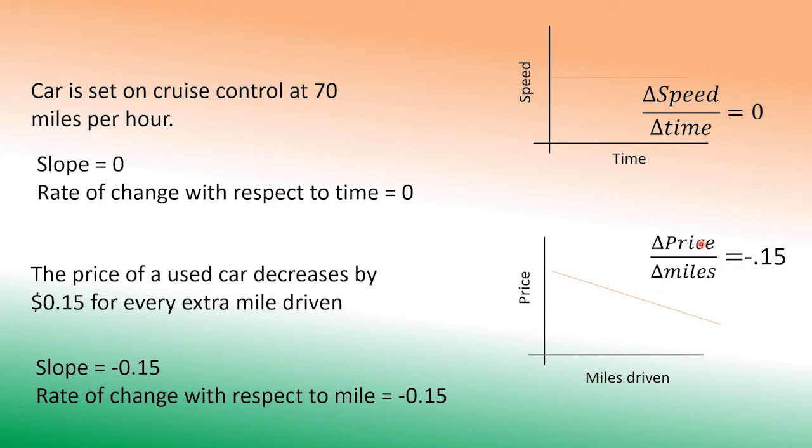The key thing here is this: there's a car which has 10,000 miles on it. To drive one extra mile, you lose the price by 15 cents. If a car has 80,000 miles on it, you drive one mile, it goes down by 15 cents, which means it's constant.